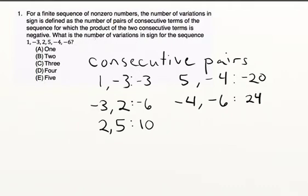So the number of variations in sign, the product is negative. So we have a negative product here, a negative product here, and a negative product here. So that's 1, 2, 3 variations.